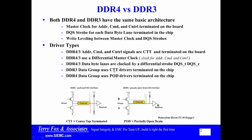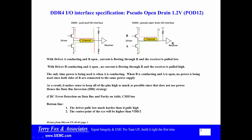In DDR3, the data group uses center-tap terminated drivers, and those drivers are terminated on the chip. DDR4 does not use center-tap terminated drivers — it uses partially open drain drivers. It is also terminated on the chip, but these two drivers behave differently. DDR3 is a push-pull type interface: when one transistor is closed and the other is open, it pulls current in one direction, and vice versa — a balanced push-pull setup.